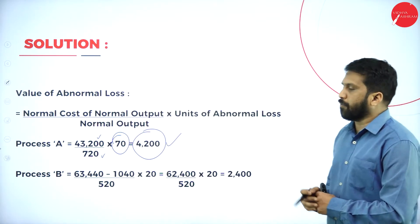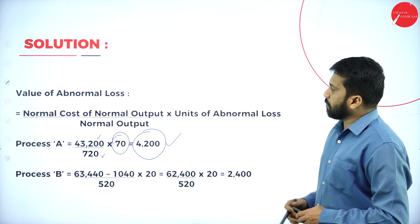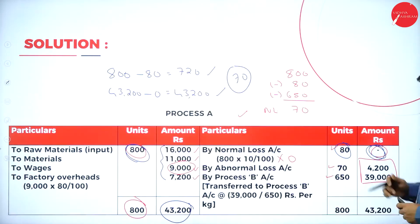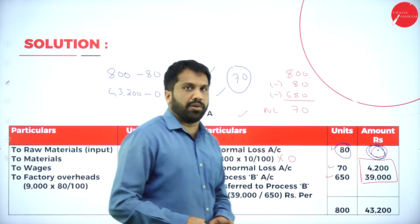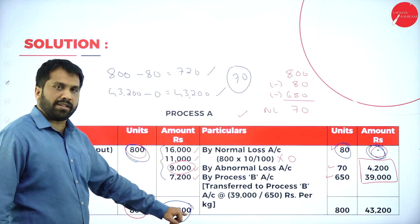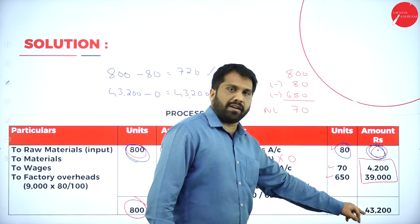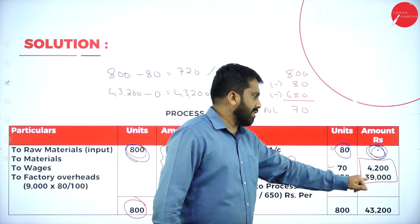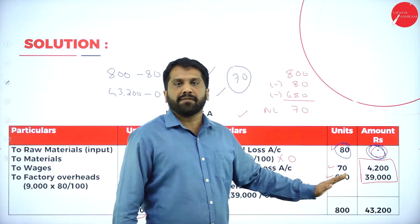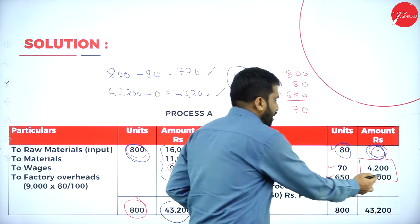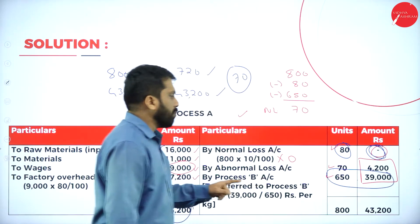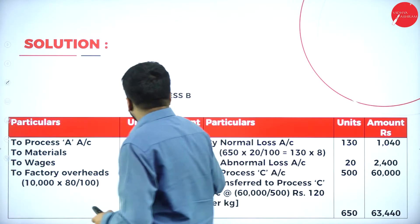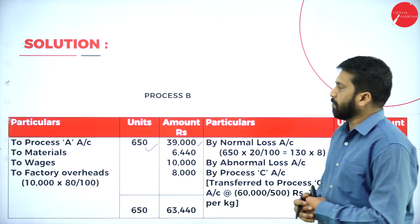To close Process A: total debit = Rs. 43,200. Abnormal loss = Rs. 4,200. Output (balancing figure) = 43,200 − 4,200 = Rs. 39,000. So Process A output is 650 kg valued at Rs. 39,000, which becomes the input for Process B.